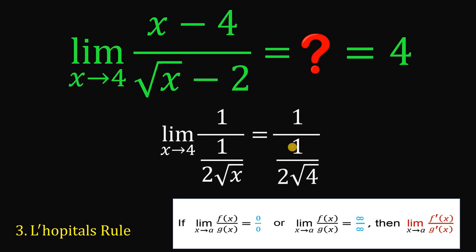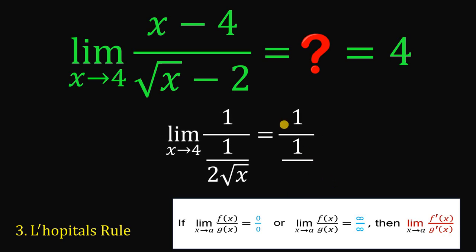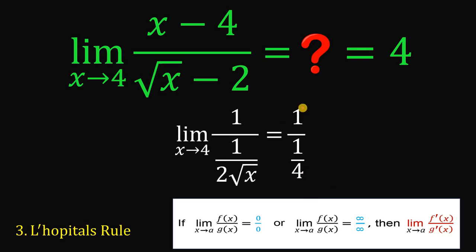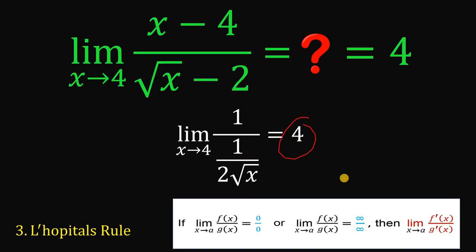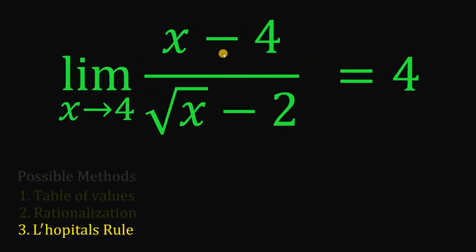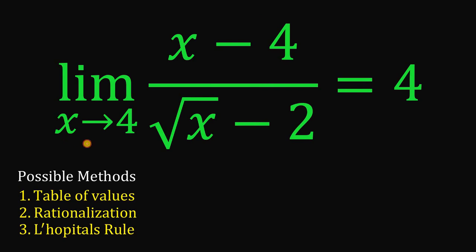Now we can plug in x equals 4: we get 1 over 1 over 2 times square root of 4. Square root of 4 is 2, so 2 times 2 is 4, giving us 1 over 1 over 4. Taking the reciprocal, the limit equals 4. Therefore, using all three methods — table of values, rationalization, and L'Hôpital's rule — the limit of x minus 4 over square root of x minus 2 as x approaches 4 equals 4.